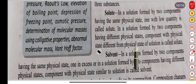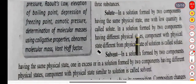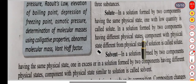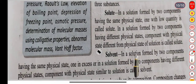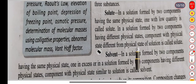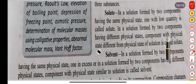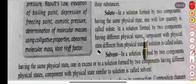In a solution formed by two components having the same physical state, the one with the lower quantity is called solute. In a solution formed by two components having different physical states, the component with a physical state different from the physical state of the solution is called solute. For example, water and salt — salt dissolves in water and forms the solution.